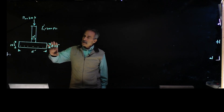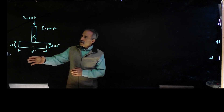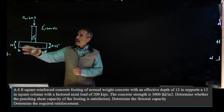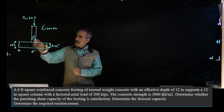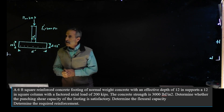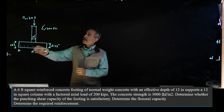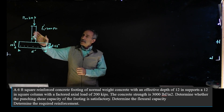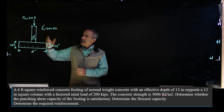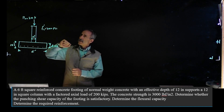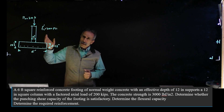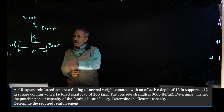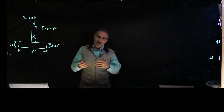We have this footing and we want to go ahead and design it. We already have the size of the footing — it's a six-foot square. The column that's going to support it is a 12-inch square column. The effective depth for this footing is going to be 12 inches to the rebar, and the footing is about 15.5 inches deep. The factored load we're going to support is 200 kips. First we'll calculate the punching shear, then the flexural shear, and then find all the steel.